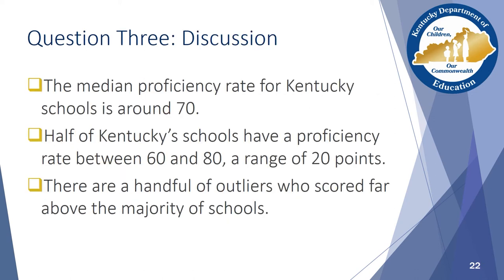Remember that a box and whisker plot gives you descriptive information about a data set. The bold line in the middle represents the median. Here we can see that the median proficiency rate for all schools in Kentucky is around 70%. The box represents the middle half of scores, and we can see that half of Kentucky's schools fall within 60 and 80%, a range of 20 points. Finally, dots represent outliers. We can see that a handful of schools scored far above the majority of schools. If we are looking to improve our school scores, it may be beneficial to identify those outlier schools and examine their characteristics.